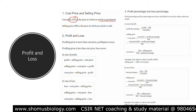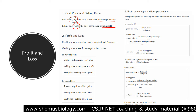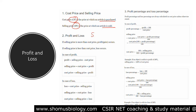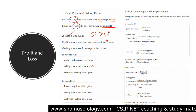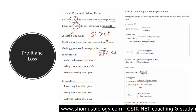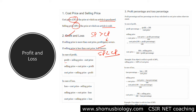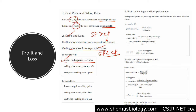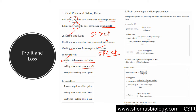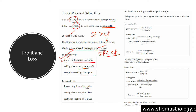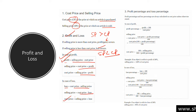Cost price (CP) is the price at which the article is purchased. Selling price (SP) is the price at which the article is sold. If selling price is more than cost price there is a gain or profit; if selling price is less than cost price there is a loss. In case of profit: profit = SP minus CP, so SP = profit + CP and CP = SP minus profit. In case of loss: loss = CP minus SP, so SP = CP minus loss and CP = loss + SP.